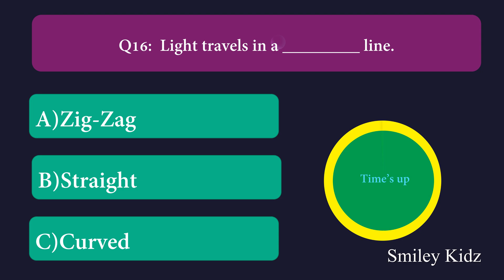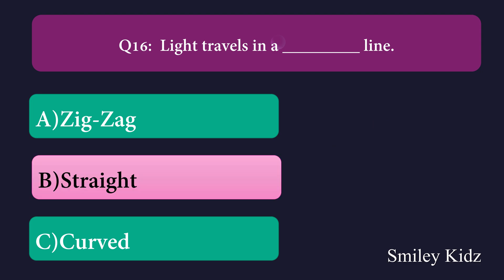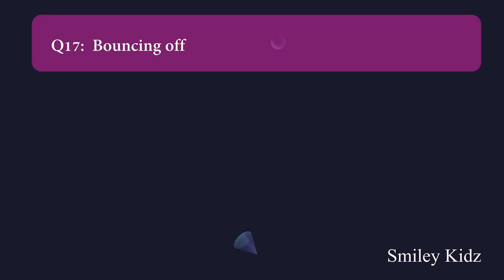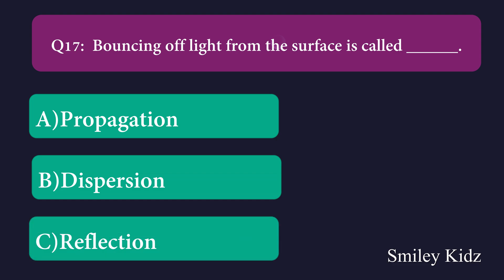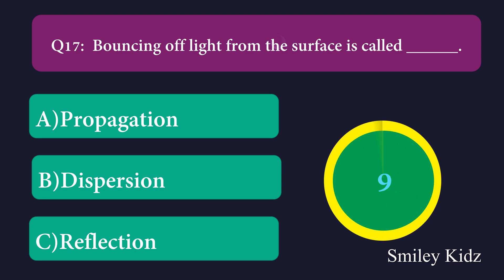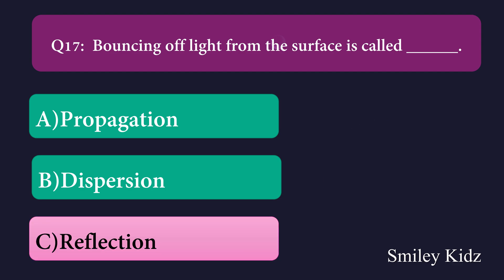Question number seventeen: Bouncing off light from the surface is called dash. Option A: propagation, Option B: dispersion, Option C: reflection. The right answer is reflection. Bouncing off light from the surface is called reflection.